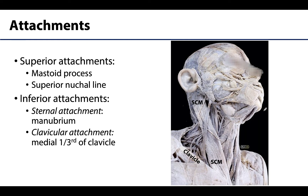One of the great things about the sternocleidomastoid muscle is that it is named based on its attachment sites. It is attached inferiorly by two heads, meaning there are typically two tendons: the more rounded sternal head, a bit lower down, and the thicker, fleshier clavicular head — that's where we get 'sterno' and 'cleido,' with cleido meaning clavicle. The superior attachments include the mastoid process of the temporal bone, and a thin aponeurosis extends into the lateral half of the superior nuchal line of the occipital bone.